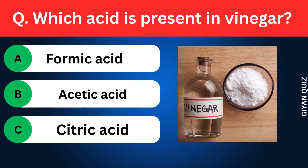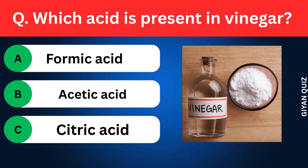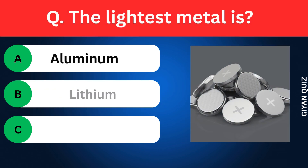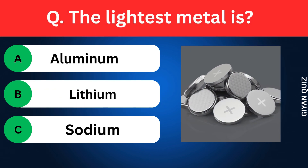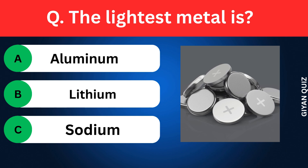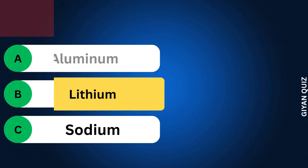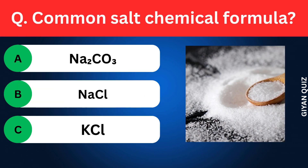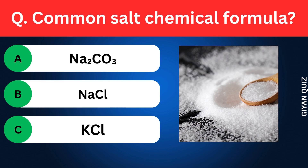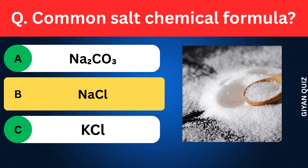Which acid is present in vinegar? Options: Formic acid, Acetic acid, Citric acid. Correct answer: acetic acid. The lightest metal is? Options: Aluminium, Lithium, Sodium. Correct answer: lithium.